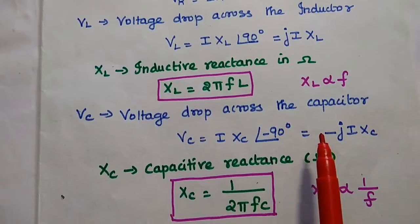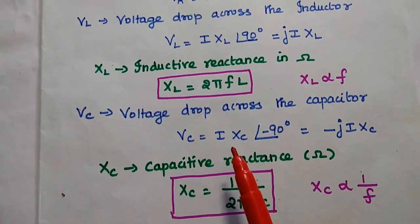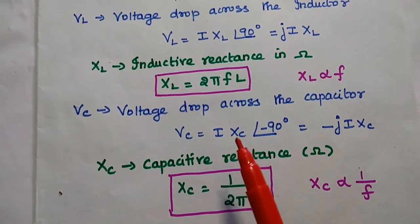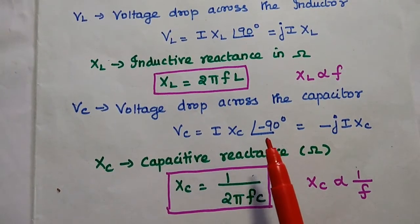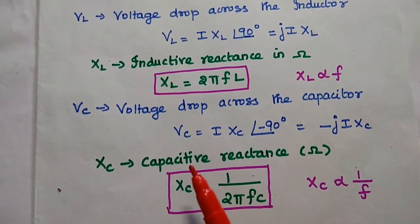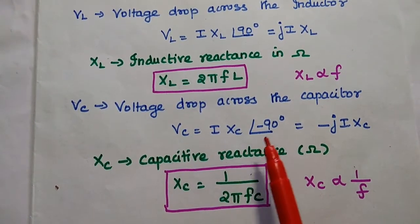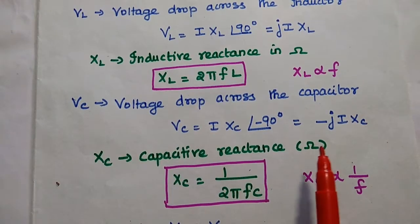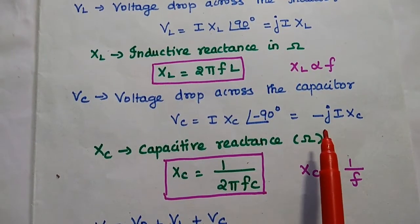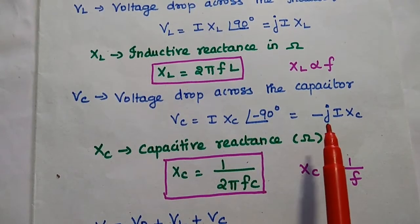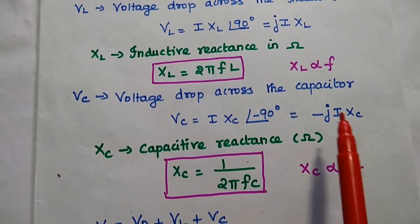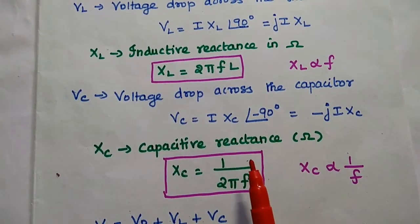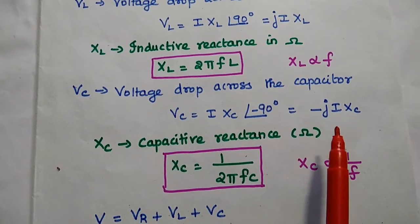The voltage drop across the capacitor Vc is equal to I into Xc with a phase of minus 90 degrees. In a capacitor, the current leads the voltage drop by 90 degrees — the voltage is lagging behind the current. The capacitor has negative reactance, so this equation can also be written as minus J times I into Xc.